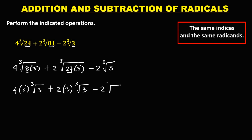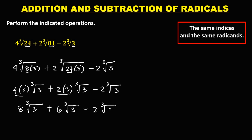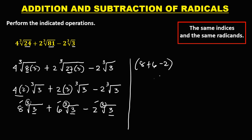So we have 4 times 2, which is 8, times the cube root of 3, then plus 2 times 3, which is 6, times the cube root of 3, then minus 2 times the cube root of 3. Observing the same indexes and the same radicands, we can combine the numbers outside: 8 plus 6 minus 2. To simplify, 8 plus 6 is 14, and 14 minus 2 is 12. Then copy the cube root of 3. The final answer is 12∛3.